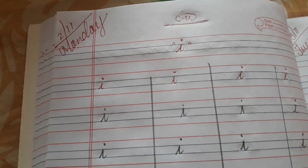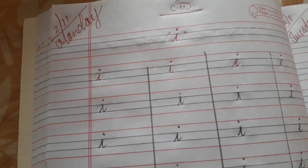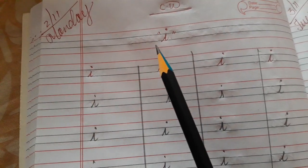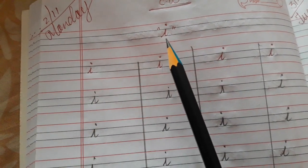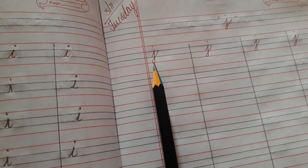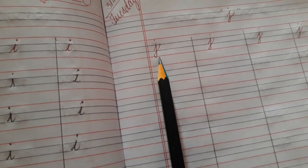Now children, take out your English notebook. Yesterday we learnt small cursive alphabet I. Today we are going to learn small cursive alphabet J.